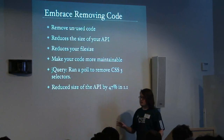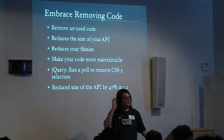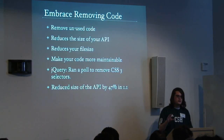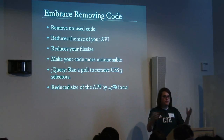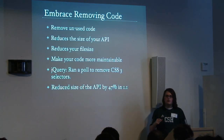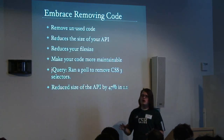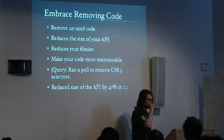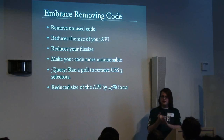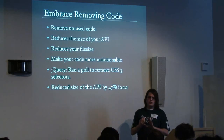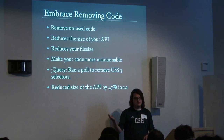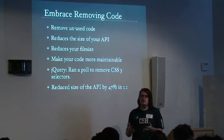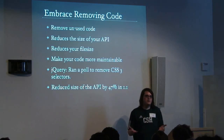You should embrace removing code wherever possible. If you're writing a library you have to support everything in it, so remove code that could be handled elsewhere. By reducing the size of your API, you make it easier to learn, you decrease your file size — which is especially important in JavaScript — and it generally makes your code more maintainable. If there's less code there, it's going to be easier to maintain.